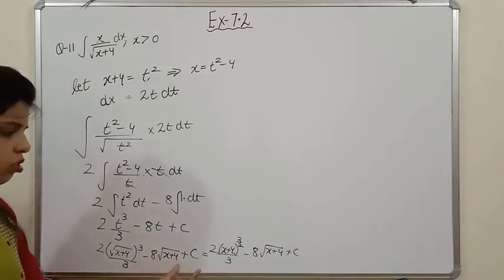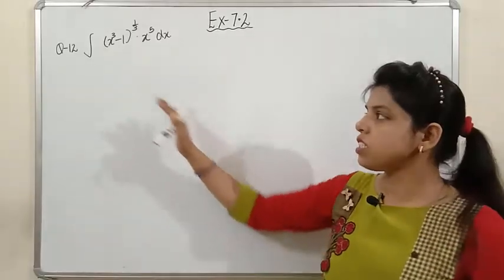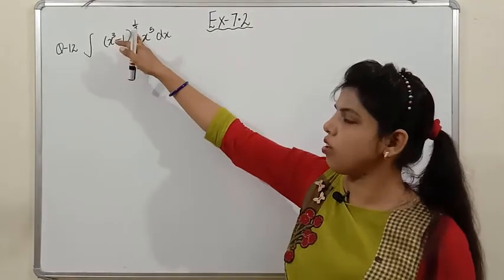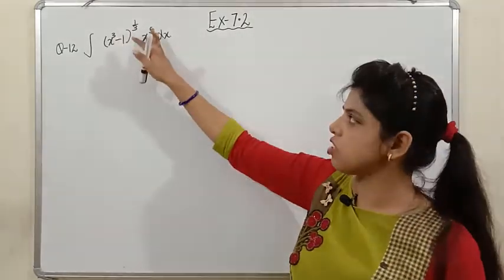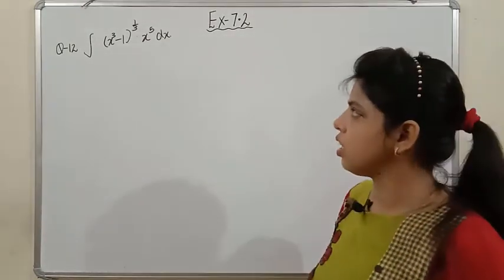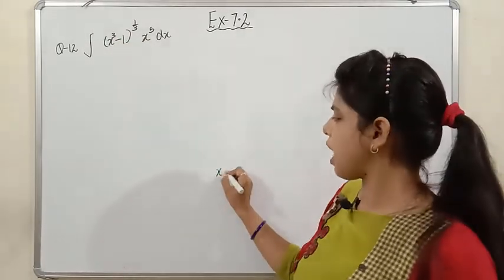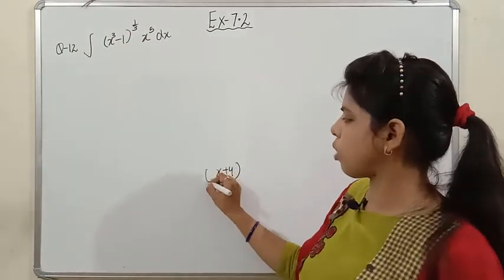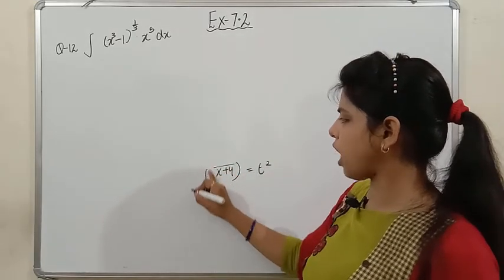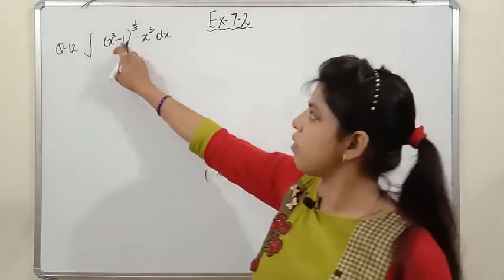Our next question is Question 12: integration of (x³ − 1)^(1/3) · x^5 dx. Look carefully — the power on the function is 1/3. In the previous question, x+4 had a square root (power 1/2), so I used t². Here the power is 1/3, so I should use t³ to cancel the cube root.